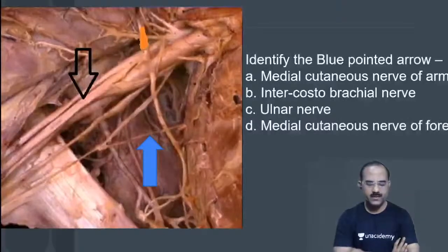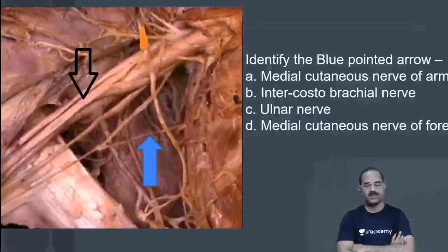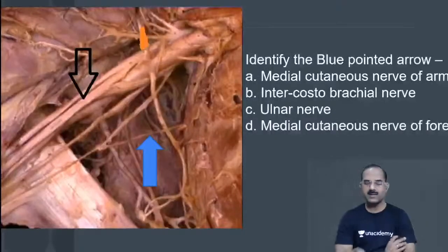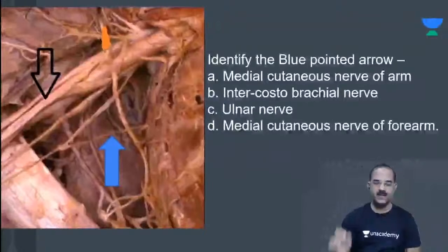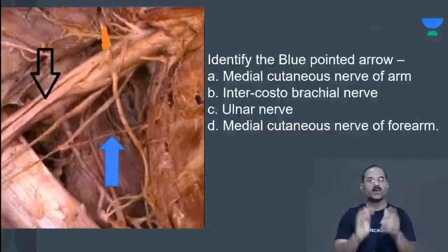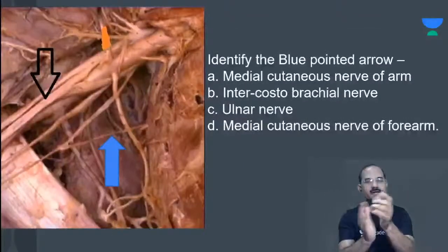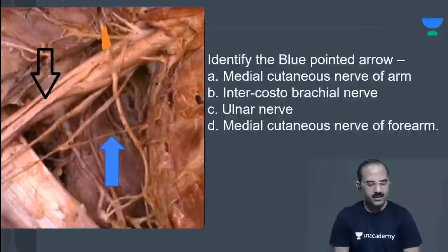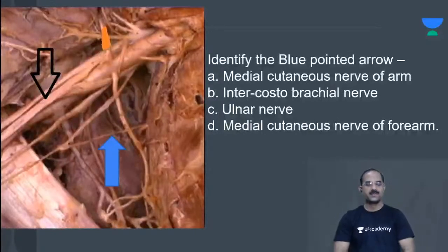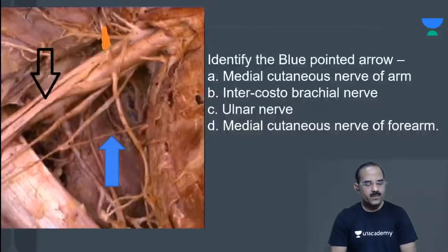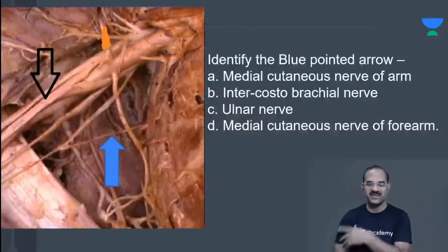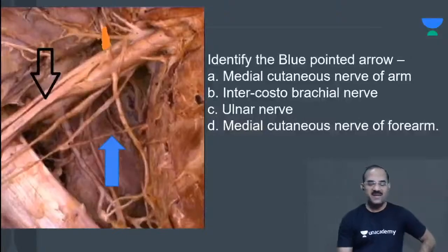The answer suggested is ulnar nerve. Any other answers? Medial cutaneous nerve of forearm. Two options are given. Now look — what is this muscle? What is this shining tendon? What is this area? This is the axilla.